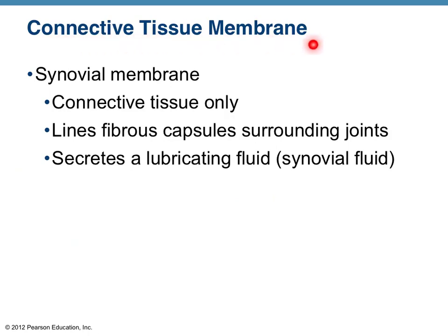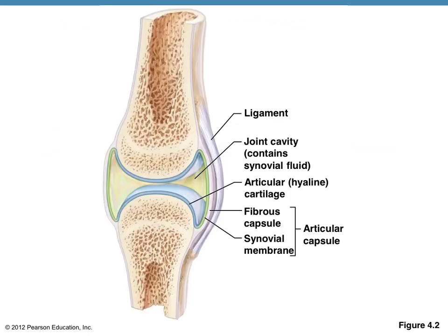Lastly, the synovial membrane is a connective tissue membrane — the only representative of connective tissue membranes. It lines the synovial joints, which are the articulating joints of the body. Common examples include your knee joint, elbow joint, shoulder joint, and knuckles — usually found where long bones such as the femur and tibia articulate with one another. For classification purposes, you need to know this is a synovial connective tissue joint, but you don't need to know the individual anatomy of a synovial joint.